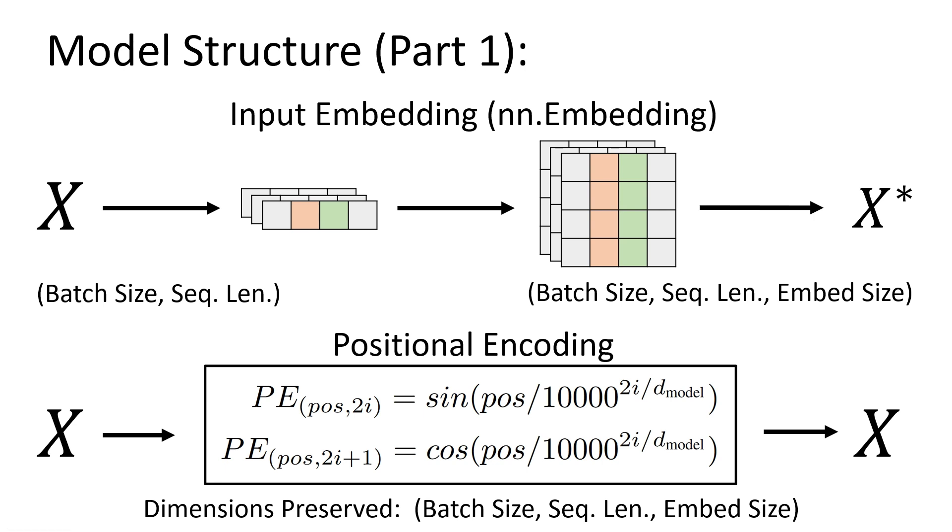To describe the model architecture before getting into the code, there are two steps that are required before the main transformer component in the model, and this is the input embedding and the positional encoding. Very similar to the time series problem from previous videos, with the exception of the input embedding being a simple PyTorch embedding layer. The embedding layer requires integer inputs, so it wasn't viable for the time series problem. But since we've tokenized our amino acid sequences according to the proper tokenization scheme, we can now use this layer for our input embedding.